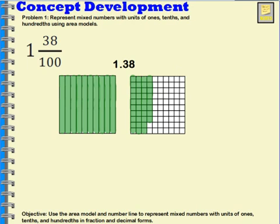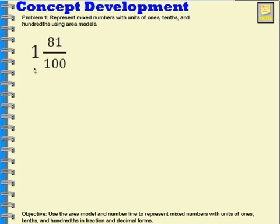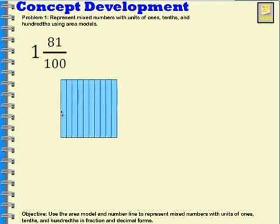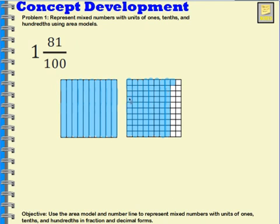Let's try one and 81 hundredths. I'm going to have a model that's completely shaded in to represent my one whole. Then I'm going to have another model that has 81 out of 100 shaded in: 10, 20, 30, 40, 50, 60, 70, 80, and one more. So this represents one and 81 hundredths. Written as a decimal, it would be 1.81 — one and 81 hundredths.